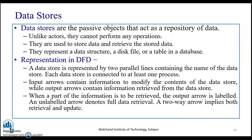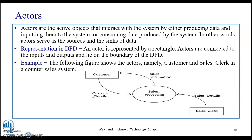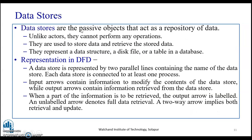Moving ahead to data stores — the actor is the active object whereas data stores are the passive objects that act as a repository of data. Unlike actors, they cannot perform any operations. They are used to store data and to retrieve stored data. They represent a data structure, a disk file, or a table in a database.